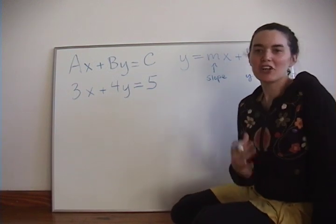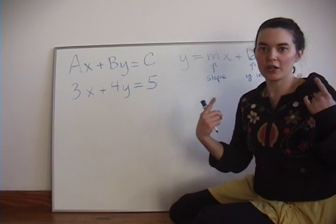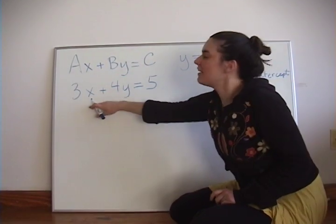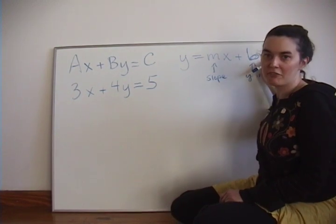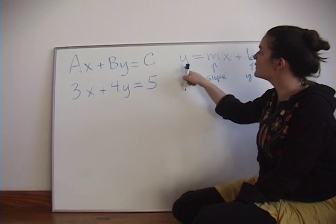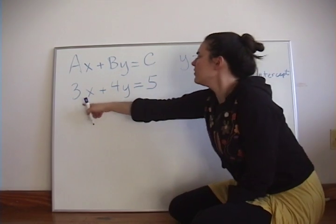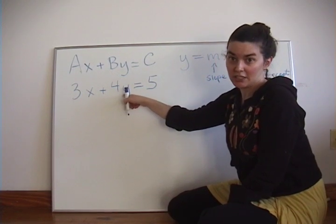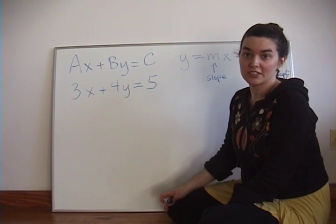When you are converting from one form to another form, it's really helpful to think about where you're trying to go. So we have this form, and we want to convert it to slope-intercept form. In slope-intercept form, Y is by itself on the left. So in order to get Y by itself on the left here, we want to subtract 3x from both sides.